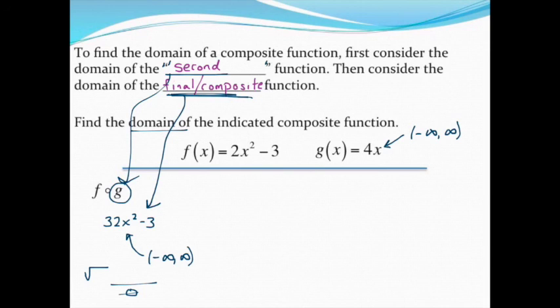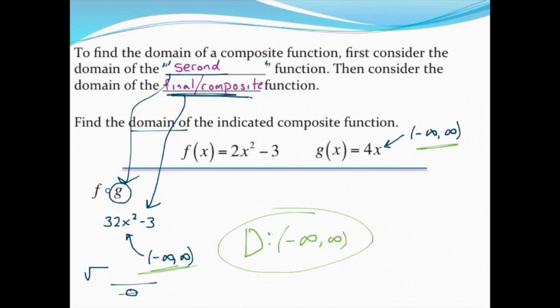So then what I need to do, getting off track there a little bit, is to state my final domain of this entire composite function. The two things I need to check are the second function, which we said the domain was all reals, and our composite function, which we also said the domain was all reals. And so putting those pieces together gets me a final domain of, well, you guessed it, all reals. X can be whatever we want it to be. There's no problem with this. In our next video, we'll take a look at what happens when we don't have a domain that's all reals.